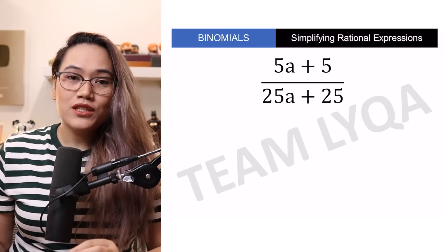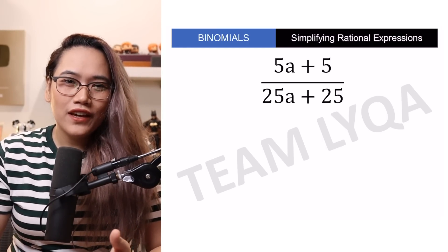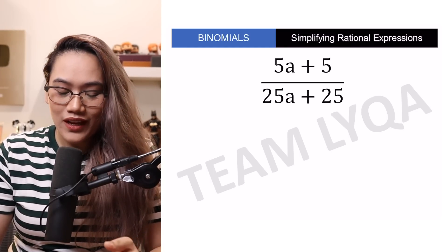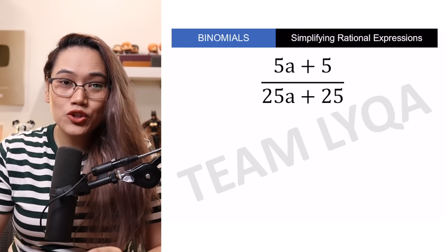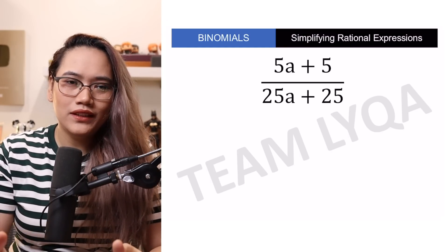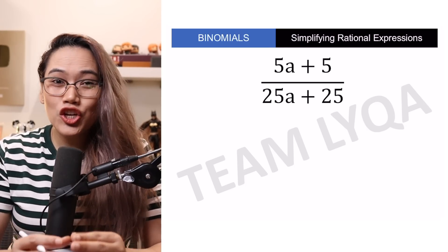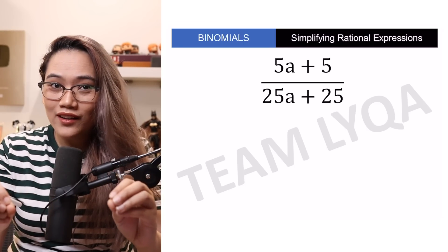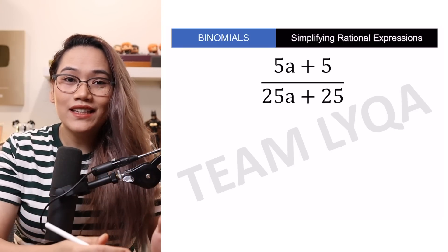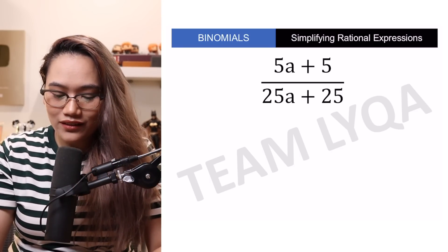You have 5A plus 5 all over 25A plus 25. Ang una natin kailangan gawin is to make sure that we factor these out completely. Pag sinabi natin na-factor natin sila out, ibig sabihin wala nang shared factor dun sa dalawa and nailabas na natin sila lahat or nahiwalay na natin sila.